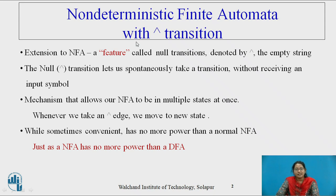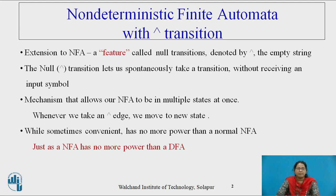The third machine is non-deterministic finite automata with null transition. This particular symbol — the empty string — is used to show null transition. It is an extension to NFA. A feature called null transition, denoted by the empty string symbol, lets the machine spontaneously take a transition without receiving an input symbol. This mechanism allows the NFA to be in multiple states at once. Whenever we take a null edge, we move to a new state. It is sometimes convenient, but it has no more power than normal NFA, just like an NFA has no more power than a DFA.